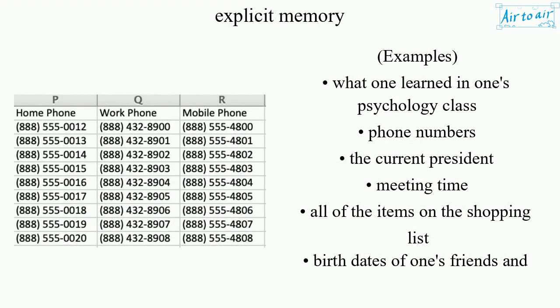Examples of explicit memory include: what one learned in a psychology class, phone numbers, the current president, meeting times, all of the items on a shopping list, and the birthdates of one's friends and family.